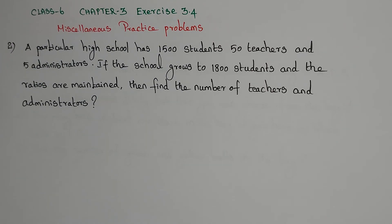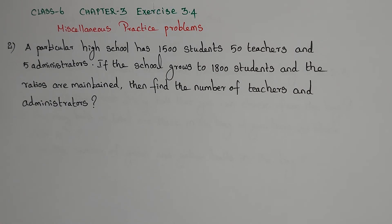Hello students, in this video we are going to learn Class 6 Chapter 3 Ratio and Proportion, Exercise 3.4 miscellaneous practice problems. Problem number 2: a particular high school has 1500 students, 50 teachers, and 5 administrators. If the school grows to 1800 students and the ratios are maintained, find the number of teachers and administrators.